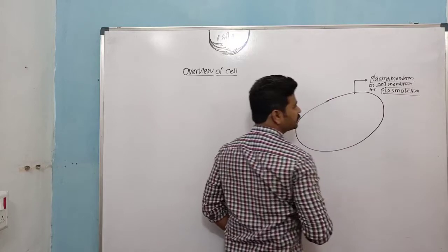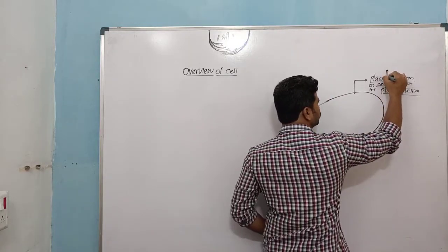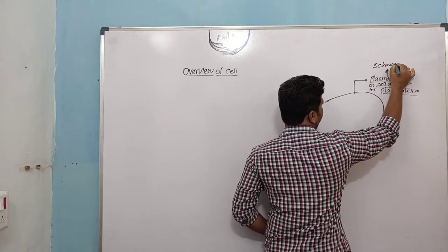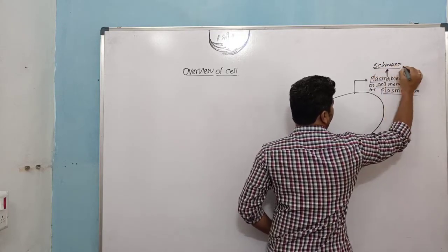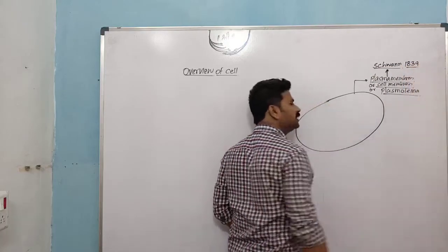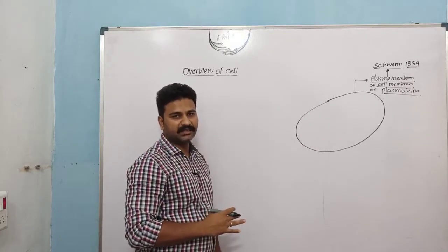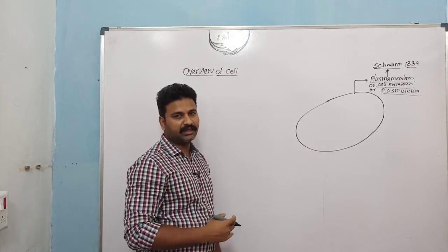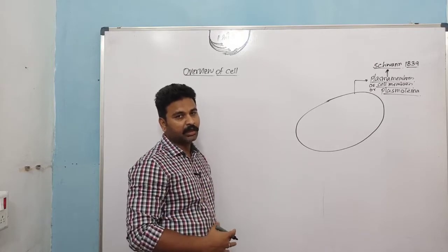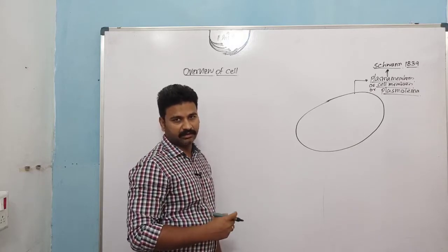These structures were defined by the scientist Schwann. The year was 1839. The outermost boundary of any cell is called the plasma membrane, cell membrane, or plasmalemma. Schwann defined this structure in the year 1838.